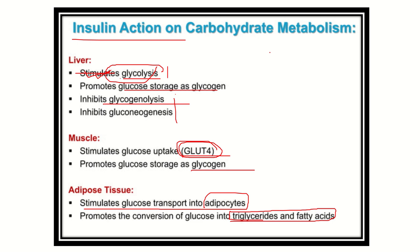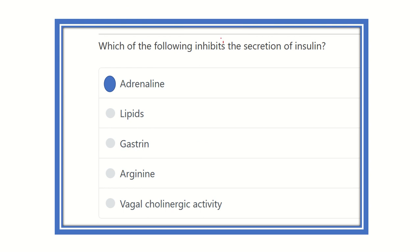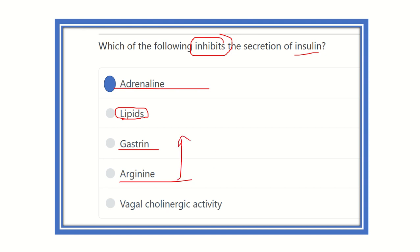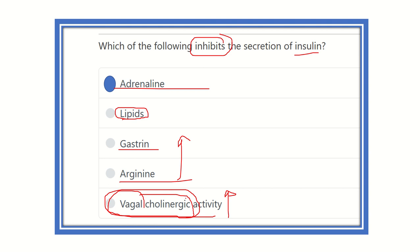So our final answer is adrenaline as the inhibitor of insulin. The other options — lipids, gastrin, and arginine — are food materials or hormones that increase insulin secretion. Vagal cholinergic activity also increases insulin secretion because cholinergic substances are parasympathetic nerve endings, and the parasympathetic nervous system promotes digestion and metabolism of food materials, which is done by insulin. Thank you.